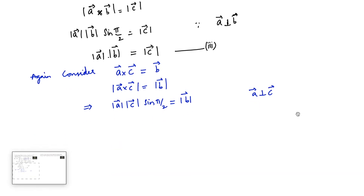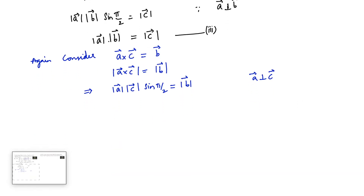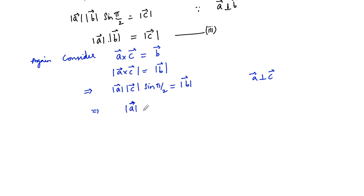Therefore, this implies that mod a into mod c times sin 90, which is 1, is equal to mod b. So mod a into mod c is equal to mod b. Consider this as equation 4.